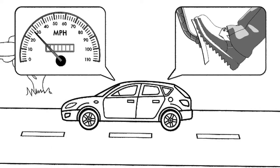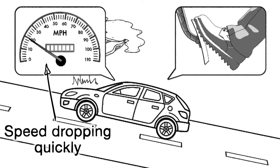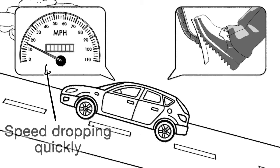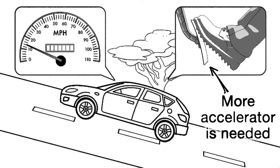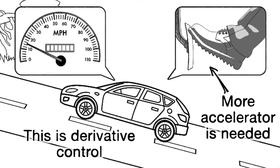What if the car suddenly starts climbing a steep hill? The speed rapidly drops off. So we need to apply a lot of accelerator quickly to counteract this sudden drop in speed. The faster the speed is dropping the more acceleration we apply. This is derivative control.